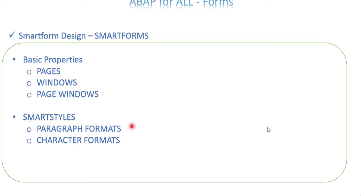Two things: Smart Styles. In MS Word, if you're creating any document, you need to align it using paragraph designing and character formats. The same thing we use in SmartForms also. I want the first paragraph to be left aligned, right aligned, or justified, and I need a character format — bold, italic, colorful, font family — those things come under a different concept called Smart Styles. This is a different transaction also. The transaction code for SmartForms is SMARTFORMS.